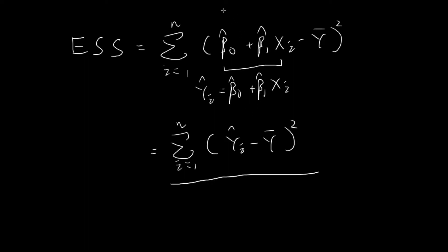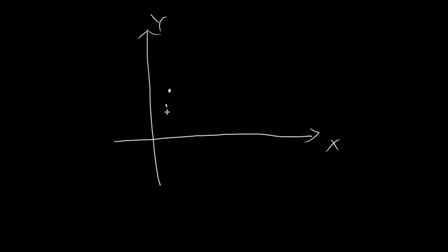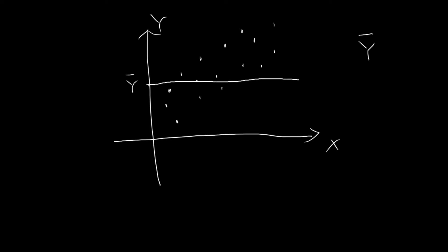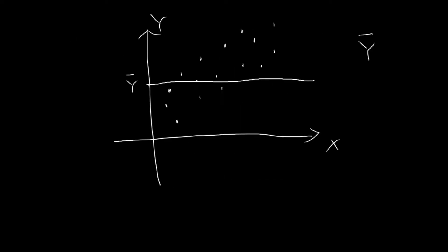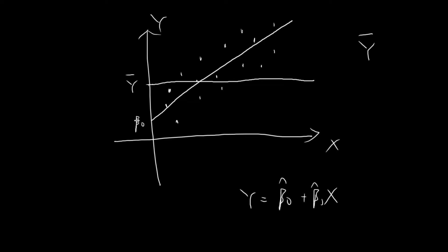Now I'll provide a geometrical interpretation of this term. We start with the xy-plane and plot all of the data points. From the y-coordinates I calculate the sample mean of y, mark its value on the y-axis, and draw a horizontal line at that value. Using our formulas I also calculate β̂₀ and β̂₁ and construct the regression line ŷ = β̂₀ + β̂₁x — a straight line through the data with y-intercept β̂₀ and slope β̂₁.